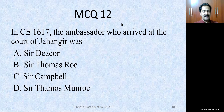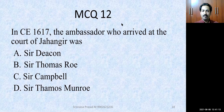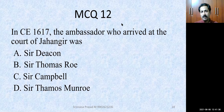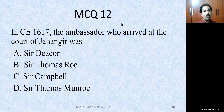MCQ number 12: In 1617 CE, the ambassador who arrived at the court of Jahangir was — Sir Deacon, Sir Thomas Rowe, Sir Campbell, or Sir Thomas Munro? The correct answer is Sir Thomas Rowe. In the year 1617, Sir Thomas Rowe visited the court of Mughal Emperor Jahangir. You may also be asked who sent him — he came from the court of King James II of England to the court of Mughal Emperor Jahangir.